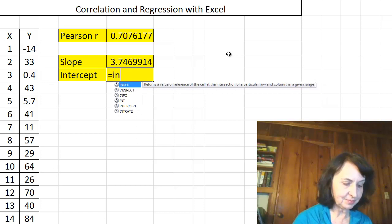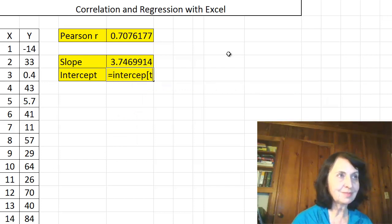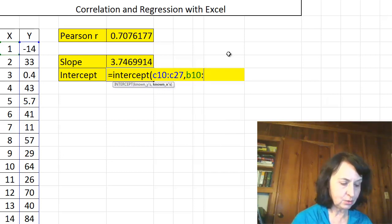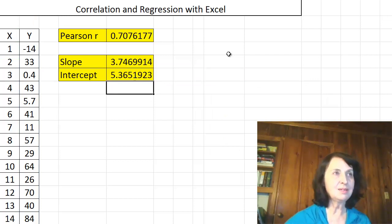The intercept. Very easy. The formula for intercept is intercept. And then again, we start with Y values, C10 to C27. This is where my Y values are recorded. And the corresponding X values are in B10 to B27, close parentheses. This is the intercept.